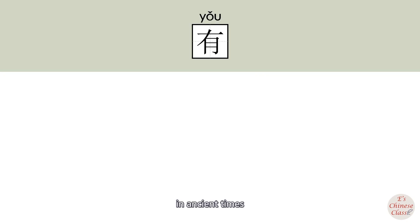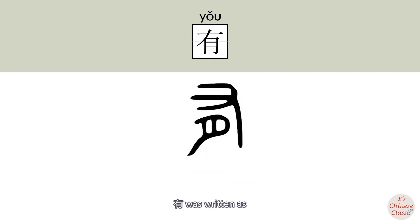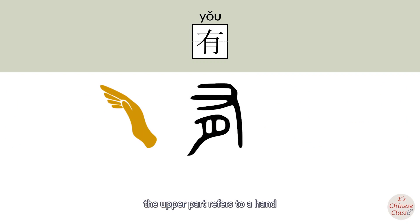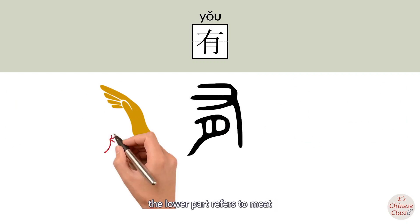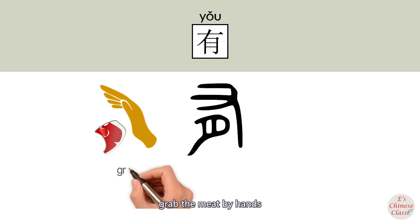In ancient times, the upper part of 有 refers to a hand, the lower part refers to meat. This character indicates 'grab the meat by hand.'